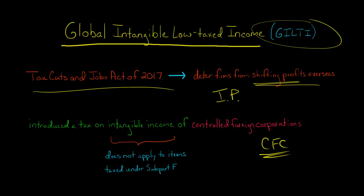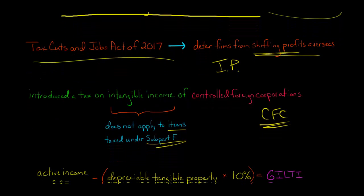Now, if you know what subpart F income is, just to let you know, GILTI is different from subpart F income. Subpart F items are not applicable to GILTI — these are two separate things. It does operate in a similar way in that the U.S. parent could end up being taxed on these overseas profits, even though there wasn't necessarily a distribution made from the foreign company to the U.S. firm.